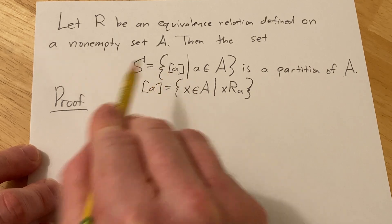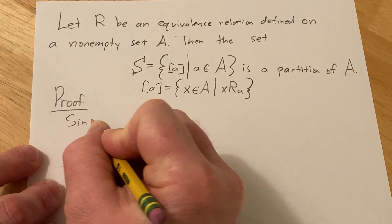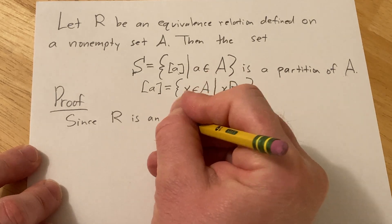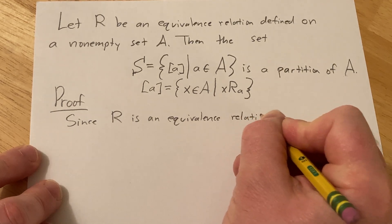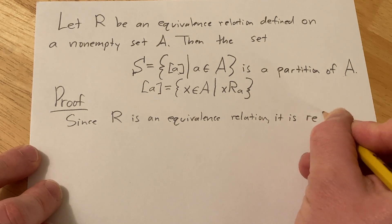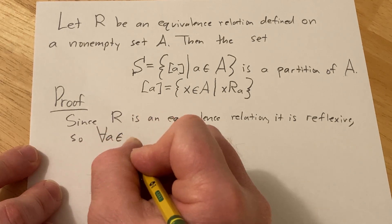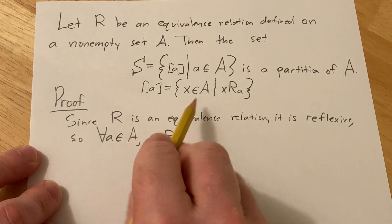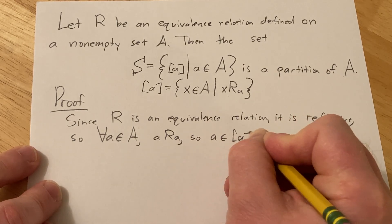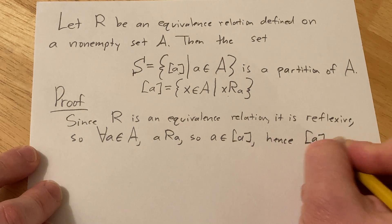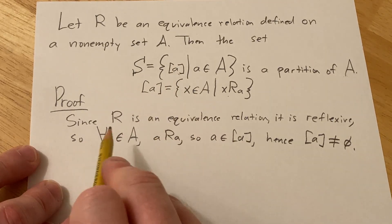So let's first establish why all of these are non-empty. R is an equivalence relation, so since R is an equivalence relation it is reflexive. So for all a in A, we have a related to a, and that's what it means to be an element in the equivalence class of a. So a is in its own equivalence class, hence the equivalence class of a is non-empty. And this holds for all a in A, so all of these are non-empty sets — we've established that fact.